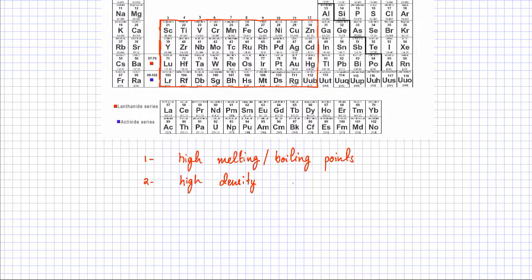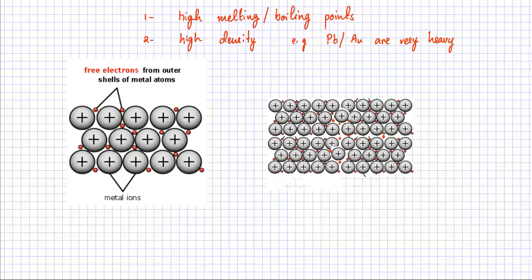And some of the metals can be very high. For example, lead and gold are very heavy. So some of these metals are extremely heavy because they have very high densities. I'm going to explain these two points, high melting, boiling points and high density, by giving you examples of two giant metallic lattices.